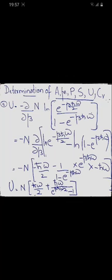Internal energy U can be determined in several ways: U = A + TS, or U = d(A*beta)/d(beta), or U = minus d/d(beta) of log(Q). Using the last form with the first partition function, U = minus N times d/d(beta) of [log(e raised to minus beta h-bar omega over 2) minus log(1 minus e raised to minus beta h-bar omega)], differentiating both terms separately. The result is U = N[h-bar omega over 2 + h-bar omega / (e raised to beta h-bar omega minus 1)].